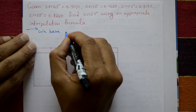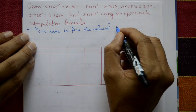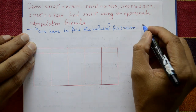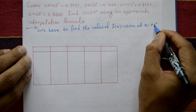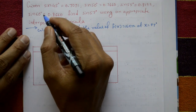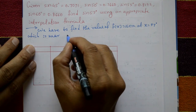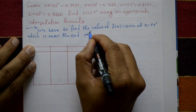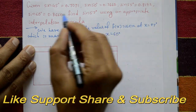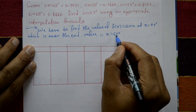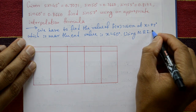We have to find the value of f(x) = sin x, where x is 57°. Now 57° is close to 60°, which is near the end value. So the end value is x = 60°. Since 57 is close to 60°, we use Newton's backward interpolation formula.